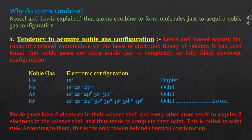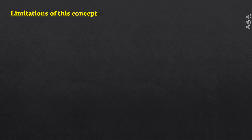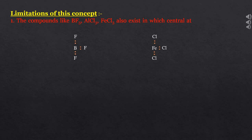According to Lewis and Kossel, atoms combine to form molecules so that they can acquire stable noble gas configuration. However, there are limitations to this concept. First limitation: compounds like BF3, AlCl3, and FeCl3 also exist in which the central atom has less than 8 electrons in their valence shell.